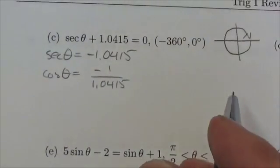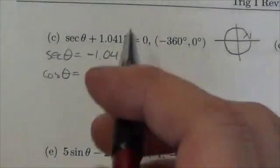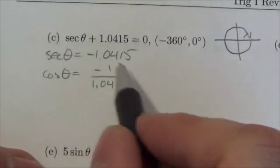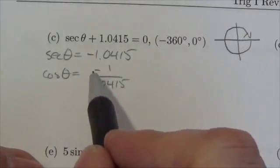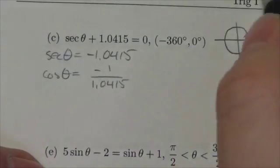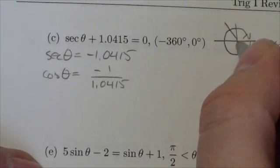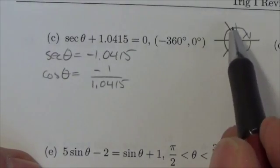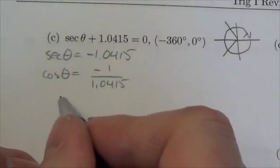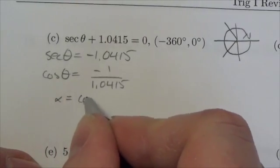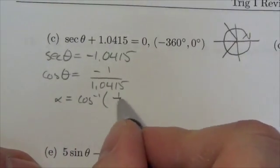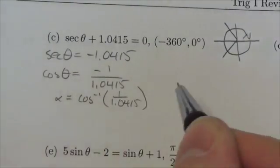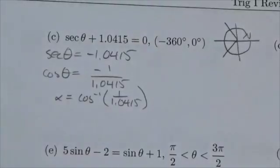The key issue is that this ratio is negative. Cosine is negative in quadrants 2 and 3, so I'll be looking for angles in those two quadrants. To find my reference angle, I'll take the inverse cosine of positive 1 over 1.0415.